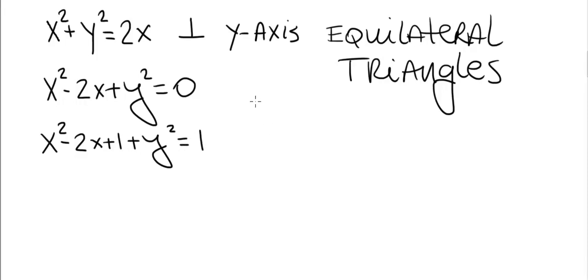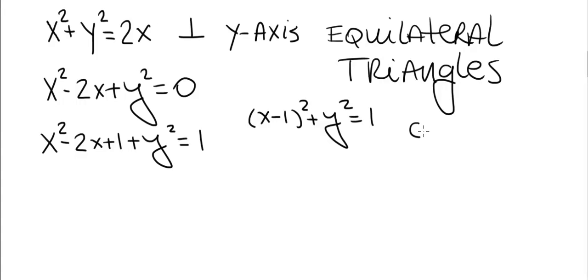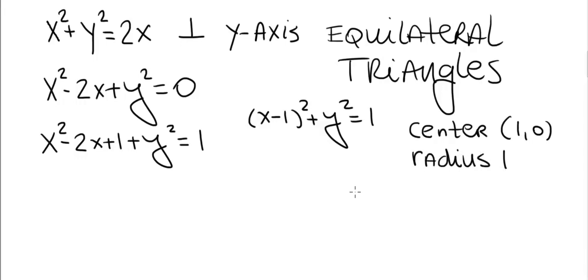x squared minus 2x plus 1 is x minus 1 squared, so we get (x minus 1) squared plus y squared equals 1. We recognize this is a circle with center at the point (1, 0) and radius 1.